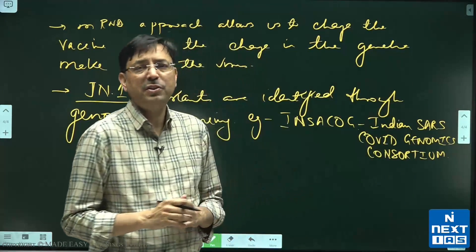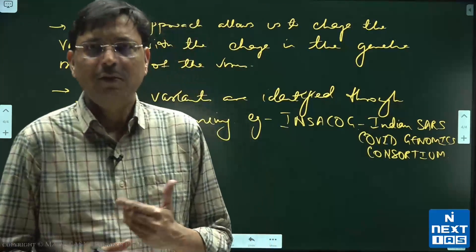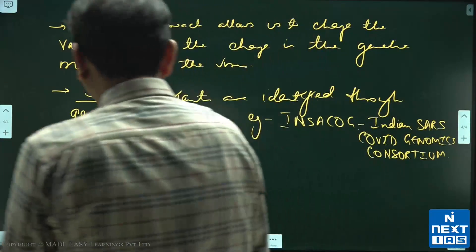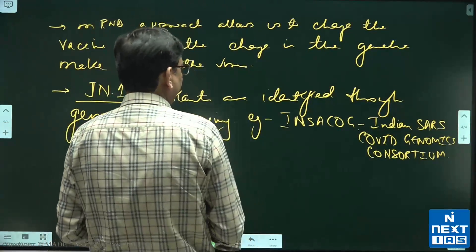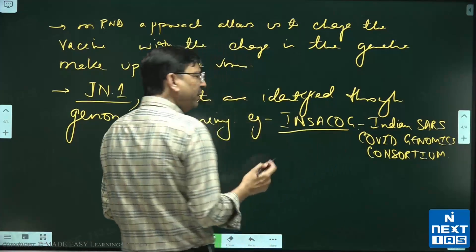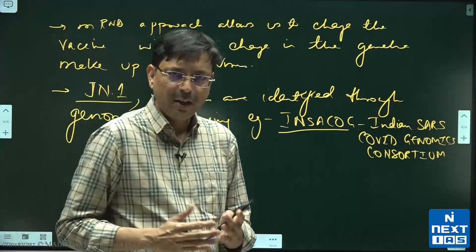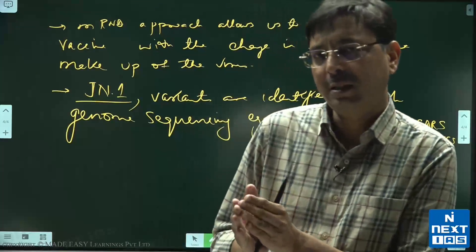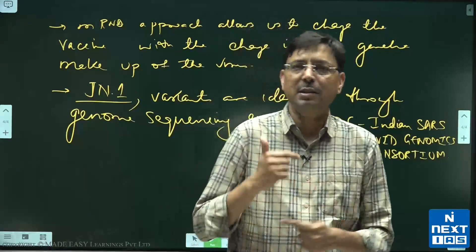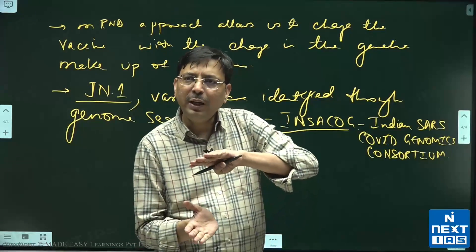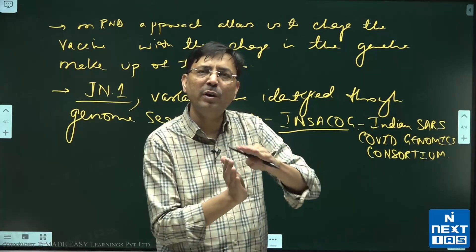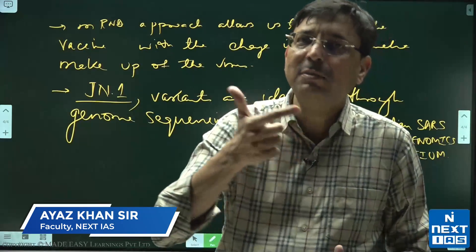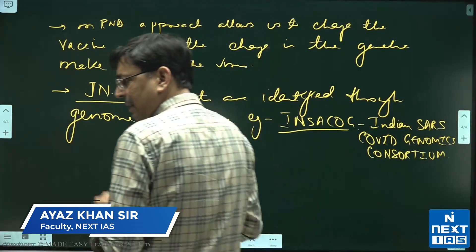It is an initiative of the Ministry of Health and Family Welfare where we study the genetic material of the coronavirus. Through this initiative like INSACOG in India, and different countries have different names for such initiatives, we can find out the variant. Accordingly, as soon as there is a change in the RNA of the virus, we can change our RNA which we are using as the vaccine. This flexibility is something unique.